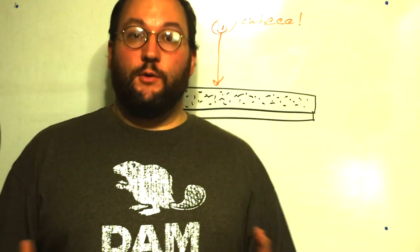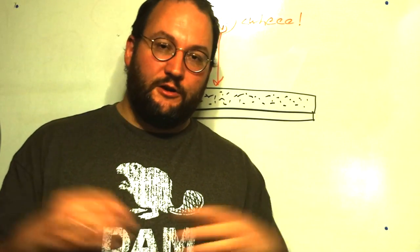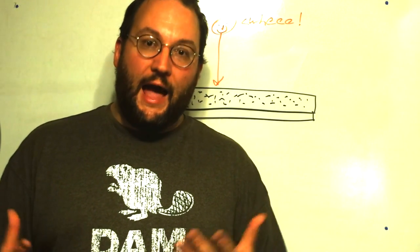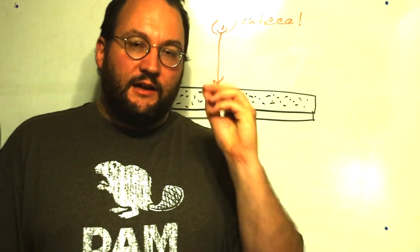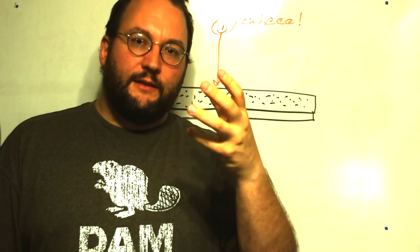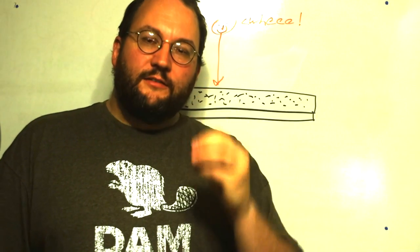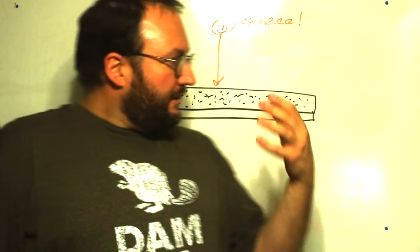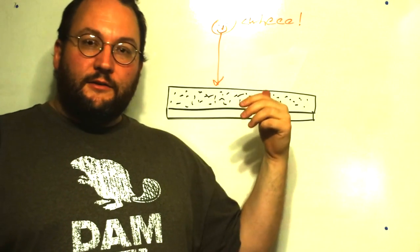One photon isn't going to change a crystal's property, otherwise all your film would always be completely black. But enough photons hitting the crystals over and over again will trigger in them a change, which causes them to turn a shade of black.